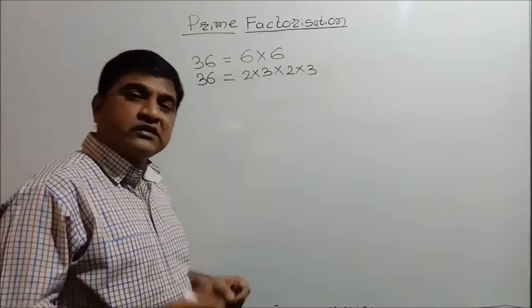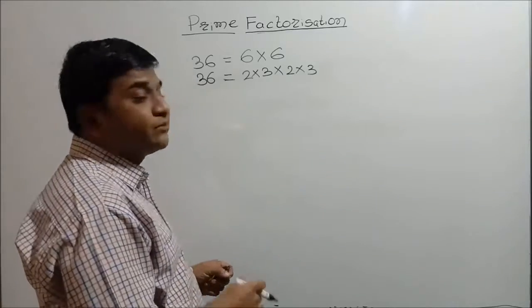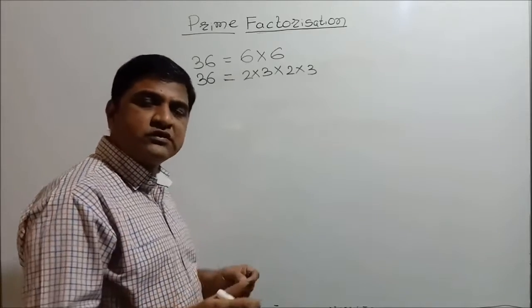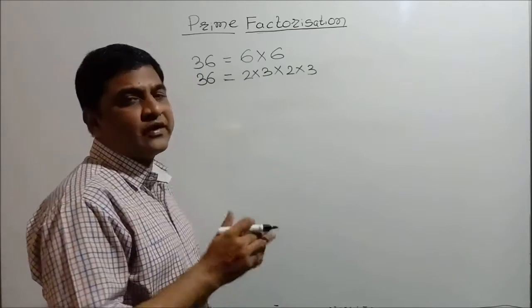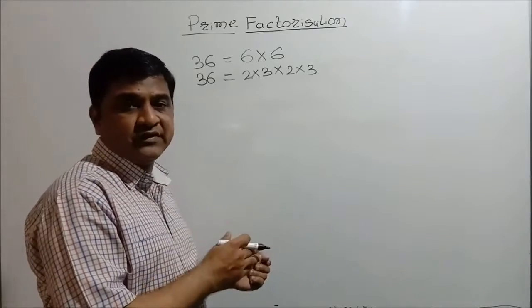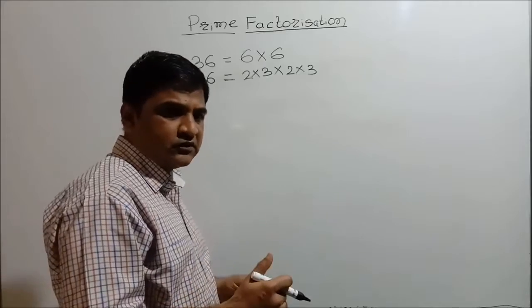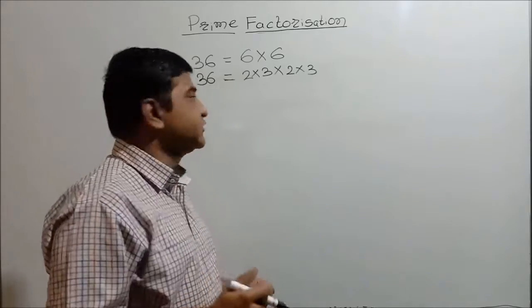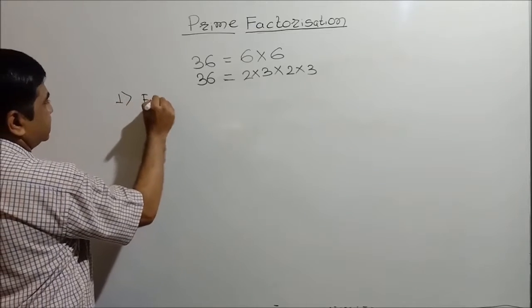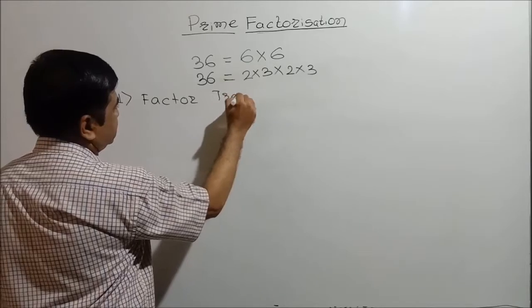But is it possible for large numbers to find out the prime factors in this way? For small two-digit numbers it is easy, but for large numbers it is difficult. For that we have one method which is known as the factor tree method. Let us see what this factor tree method is.